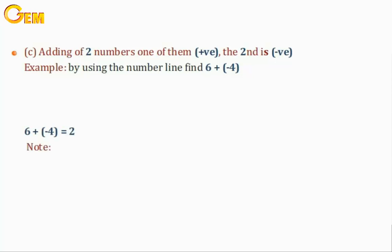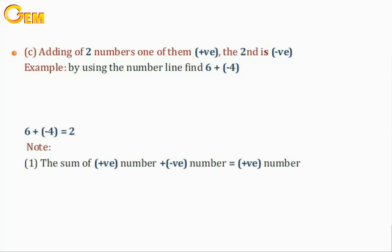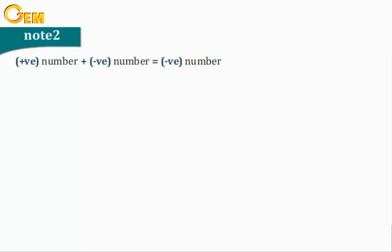Note 1: The sum of a positive number plus a negative number equals a positive number if the bigger number is positive. Note 2: A positive number plus a negative number equals a negative number if the bigger number is negative.